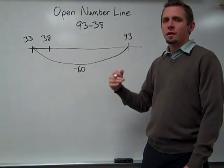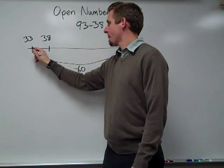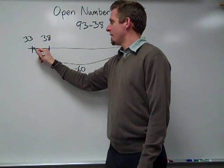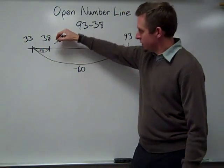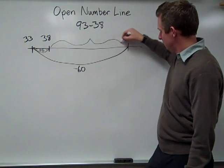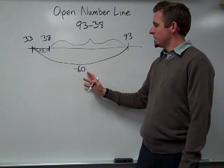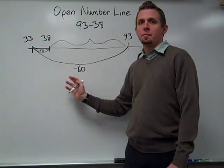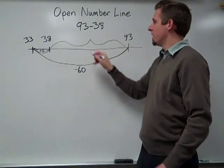So now to get to 38, what would I need to do? I would have to add 5. So I add 5 there to get to 38. So now I'm trying to find the distance between the 93 and the 38. That would be going down 60 then up 5 for a difference of 55.